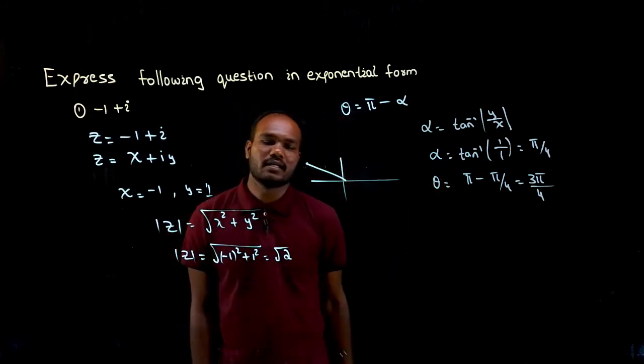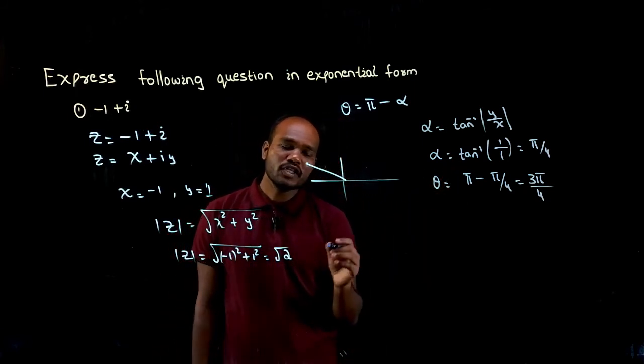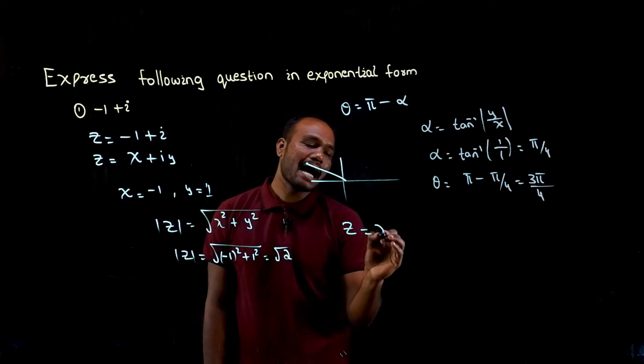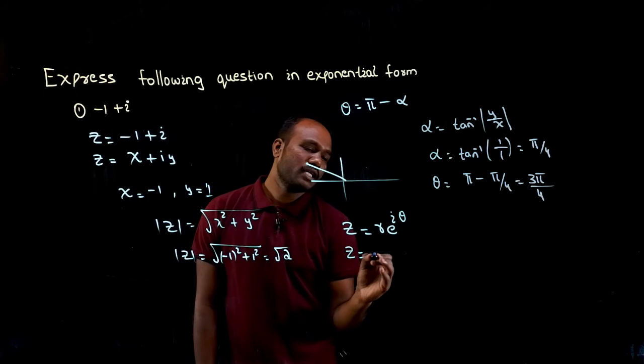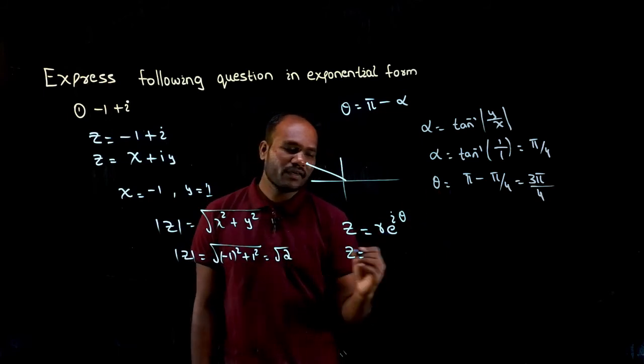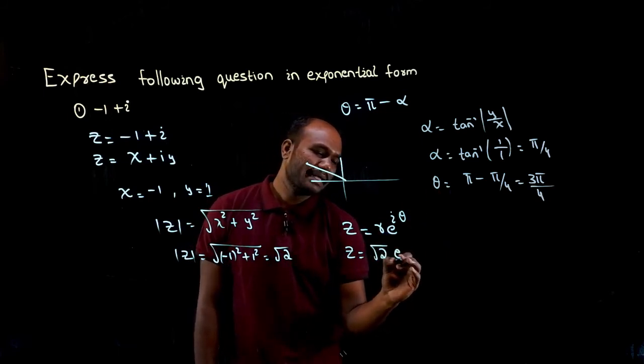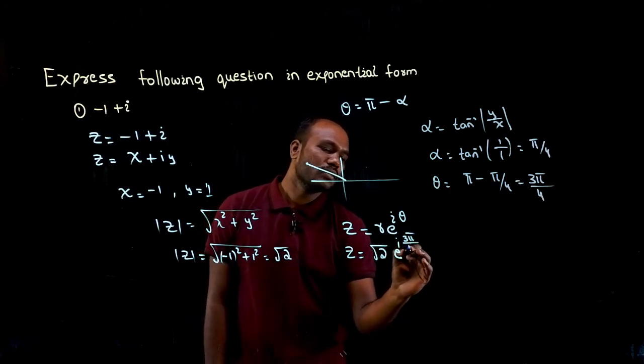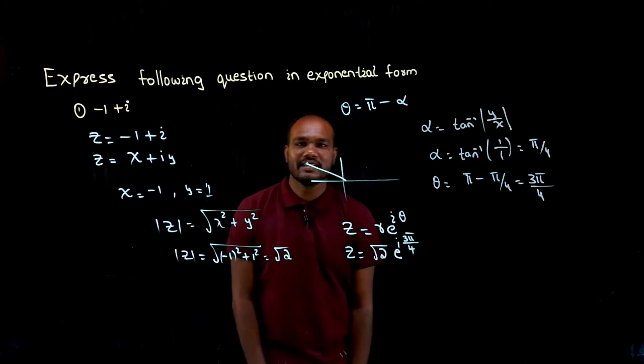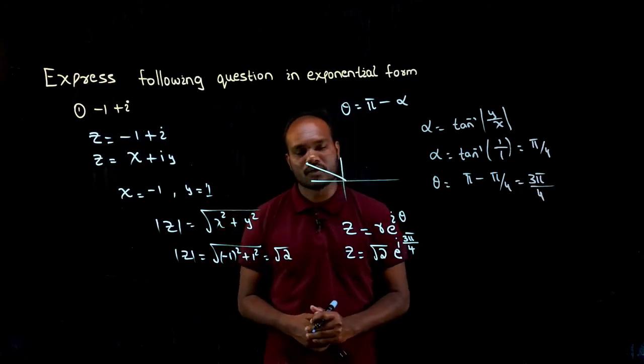Theta we have. Modulus we have. What is exponential form? Exponential form is r × e^(iθ). This is an exponential form. So z will be equal to what? R. What is the value of r? √2 e^i times. What is the theta? 3π/4. Is that good? Yes or no? Yes? Okay.